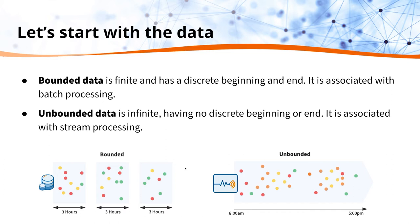Unbounded data is infinite — it has no discrete beginning or end. This type of data is associated with stream processing. An example would be an air quality sensor recording a data point every second, 24 hours a day, 365 days a year. There's no beginning and end, and that's the key differentiation between these two types.